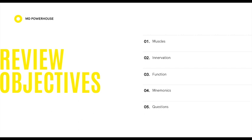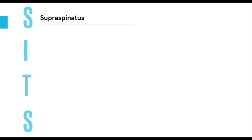You can remember the rotator cuff muscles with the mnemonic SITS. S stands for supraspinatus, I for infraspinatus, T for teres minor, and S for subscapularis.